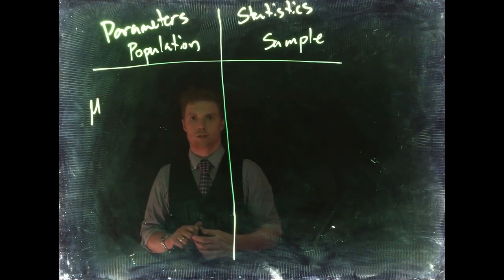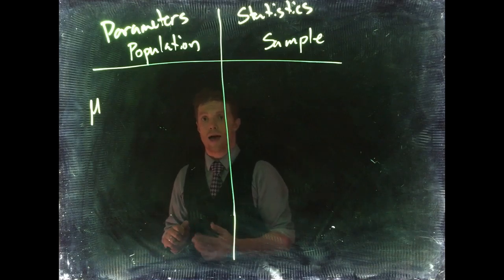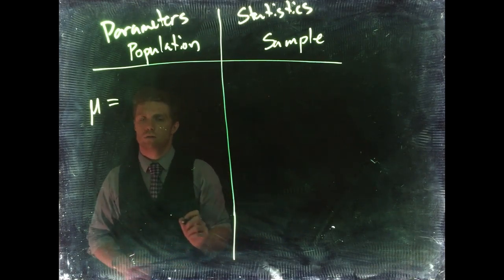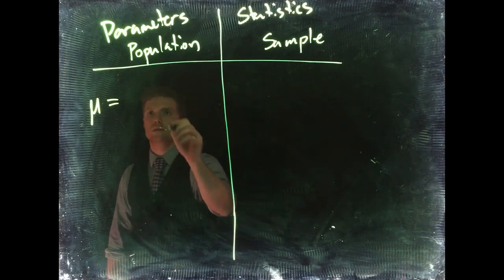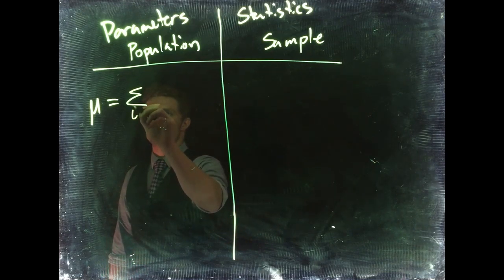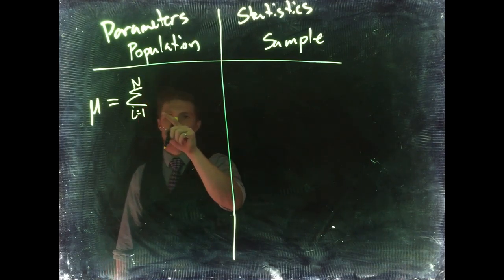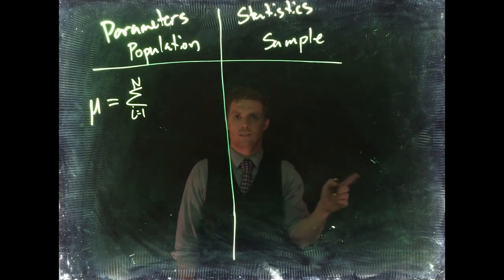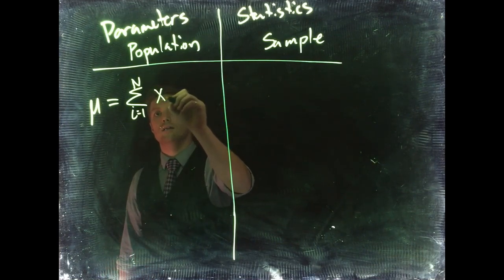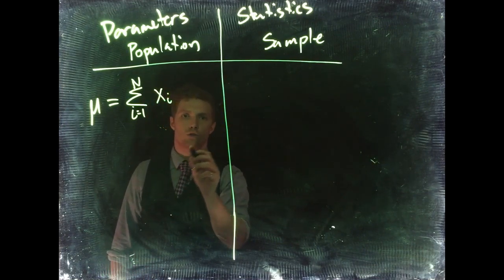When we talk about the mean for the population, we are talking about mu — that is the population mean, the true mean value of whatever we're measuring in the population. If we're measuring tree heights on Casper Mountain, that would be the true average height of all the trees. So mu equals the summation from i equals 1 to capital N.